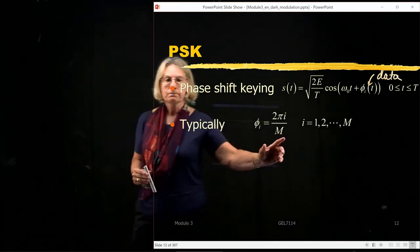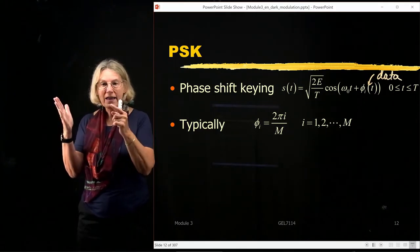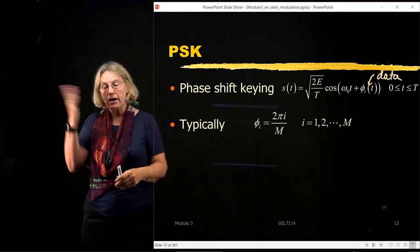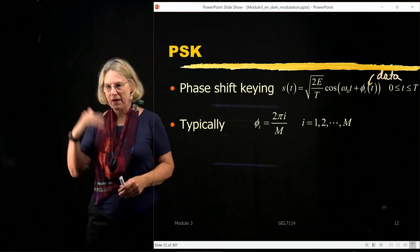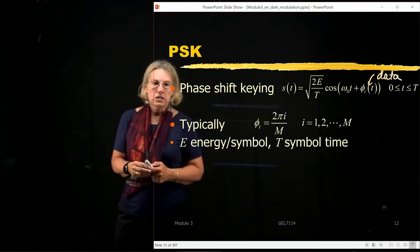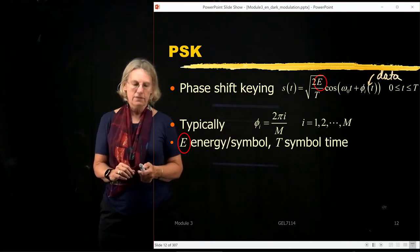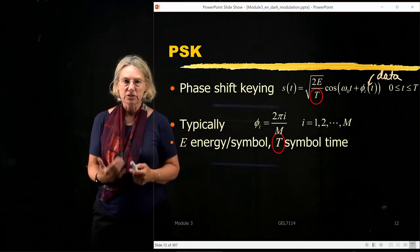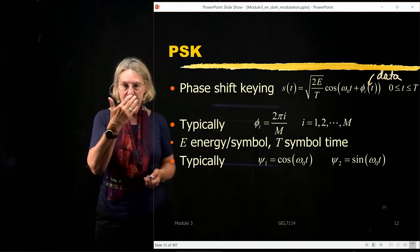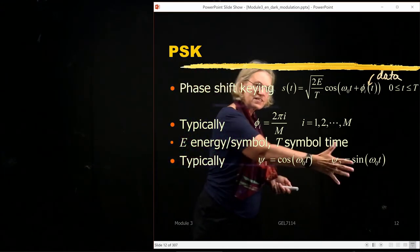We typically take M symbols in the constellation — say 8 symbols — and divide 2π into 8 equal segments, stepping through 2π/8, 4π/8, 6π/8, etc., equally spaced around the unit circle. The E in the equation is the energy per symbol, and T is the symbol time. For the signal space representation with a carrier, I choose basis functions cosine and sine of the carrier frequency.